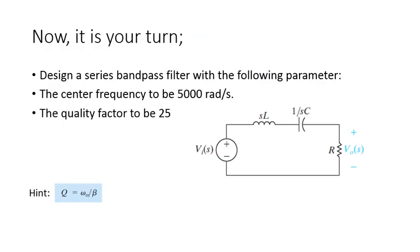Now, it's your turn. I want you to design a series bandpass filter, where the center frequency is 5,000 radian per second, and the quality factor is 25. I'll give you a hint here. Quality factor was simply found by dividing omega naught by beta. So, the quality factor is omega naught over beta. Using this formula, you can find beta, and then you can simply solve the problem. Try to solve it yourselves, and come up with your questions tomorrow to the online class.